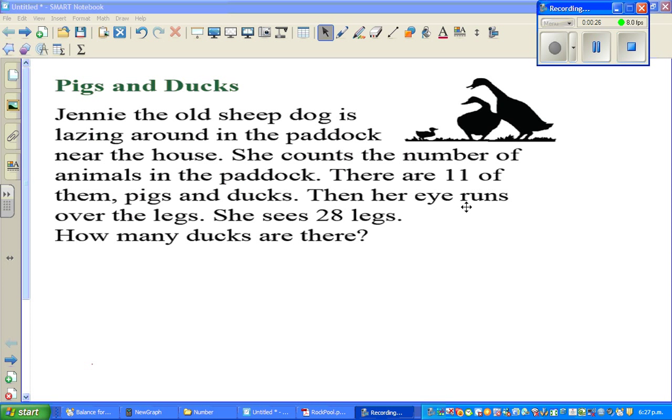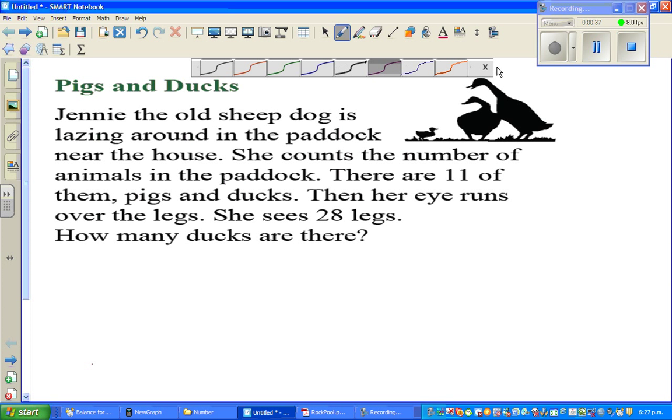Then her eye runs over the legs. She sees 28 legs. How many ducks are there? Now this is an interesting question. So how can we do it? What are the information that we have? There are 11 pigs and ducks.